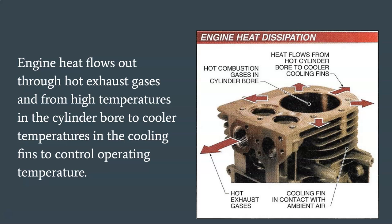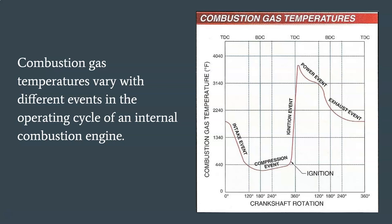Heat flow is similar to electron flow when there is a difference of voltage between two points in a circuit. Combustion gas temperatures vary with different events in the operating cycle of an internal combustion engine, varying greatly in a short period of time. Combustion gas temperature is typically lowest toward the end of the intake event. During compression, temperature increases from compression of the air and fuel molecules, then peaks soon after ignition, and decreases during the power and exhaust events.